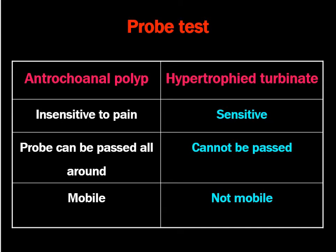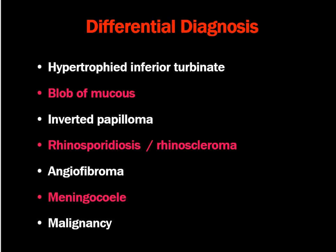Probe test for antrochoanal polyp: the polyp is insensitive to probing as there are no nerve endings, so the polyp is painless. When you touch it there is no pain. The probe can be passed all around. Antrochoanal polyp has a pedicle, so the probe can be passed around it. It is a pedunculated structure and is mobile. Hypertrophic turbinate is not mobile, so you can simply identify the difference from there.